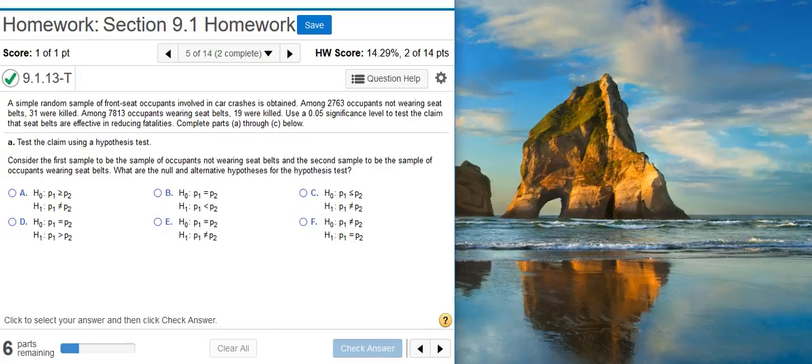Part A asks us to test the claim using a hypothesis test. The first part of the hypothesis test is forming our null and alternative hypotheses. We're doing a hypothesis test on proportions, so our parameter in our hypothesis is going to be proportions, which we see here. But which of these answer options is the right one? Let's figure that out.